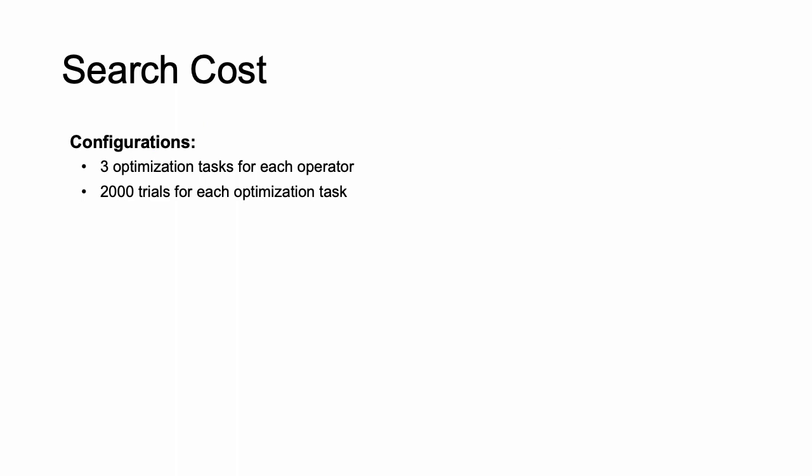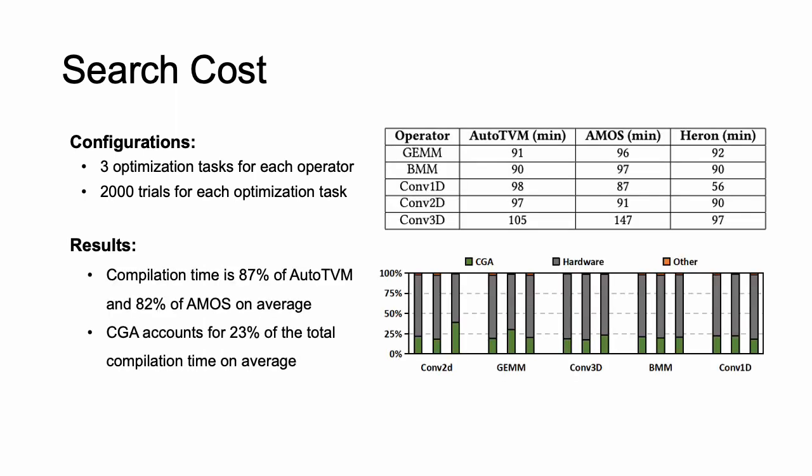We also check the compilation cost of Heron. We experiment on five different operators. For each operator, we test three different problem sizes. For each problem size, we set the maximum trials to 2000 for all the baselines. Heron's compilation time is 87% of AutoTVM and 82% of Amos on average. The execution time of the proposed CGA accounts for 23% on average. So Heron does not introduce additional compilation costs for solving constraint satisfaction problems.